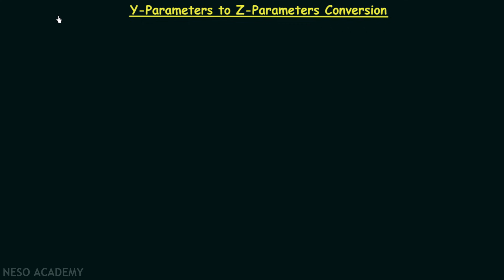We now have sufficient knowledge of Z parameters and Y parameters, and now we want to perform the conversion of Y parameters to Z parameters. This means we have the Y parameters and we want to express the Z parameters in terms of Y parameters. So let's see how we can perform the conversion.